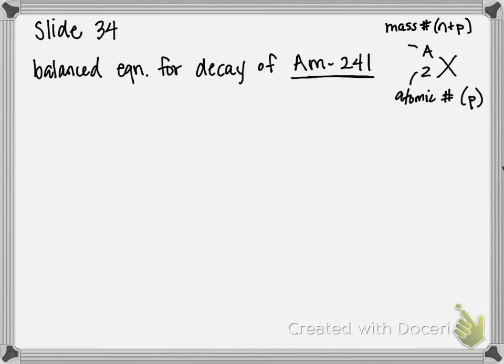This 241 next to our Am symbol is actually the mass number for americium. To translate that into a symbol, it's going to be Am with 241 on top. They didn't give us the number of protons, but you can go to your periodic table and look for americium — it's in the very bottom row, the one that's even separate from the main periodic table — and it's got a little 95 above it. Those numbers on the periodic table correspond to numbers of protons, so on the bottom we're going to put 95.